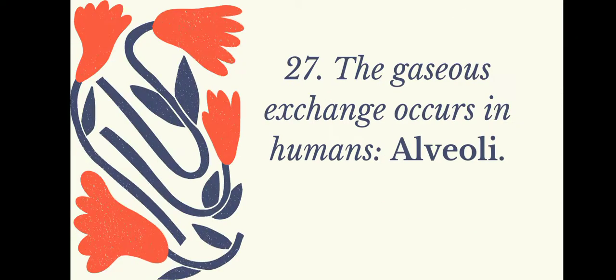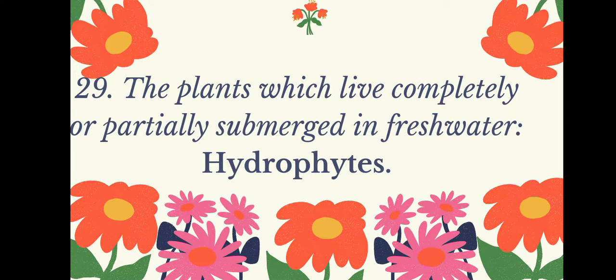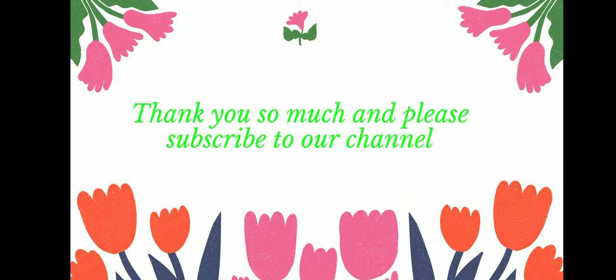Gaseous exchange occurs in humans through the alveoli. Most of the gaseous exchange in a leaf occurs through stomata. Plants which live completely or partially submerged in fresh water are called hydrophytes. The organ responsible for filtering the blood is the kidney.